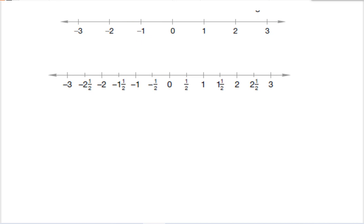On my second line, each tick mark shows a fraction or a mixed number. A mixed number is a fraction plus a whole number. So halfway between 0 and 1 is 1 half, and halfway between 1 and 2 is 1 and 1 half.